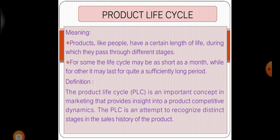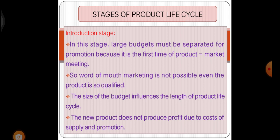Now, we are going to see the stages of product life cycle. The first stage is the introduction stage. In this stage, large budgets must be allocated for promotion because it is the first time of product-market meeting, so word-of-mouth marketing is not possible. The size of the budget influences the length of the product life cycle. The new product does not produce profit due to cost of supply and production.